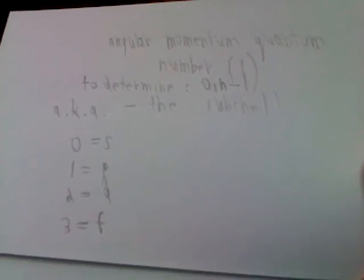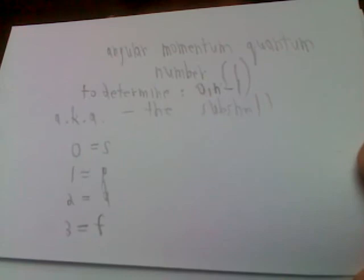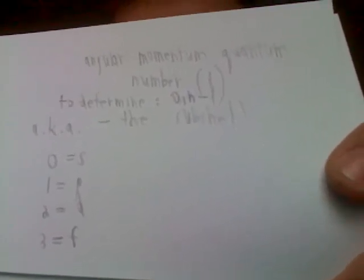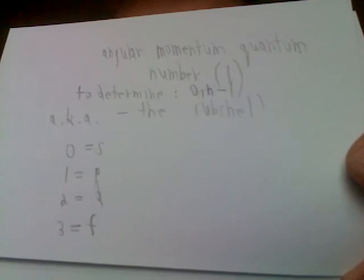These are all the whole number values from negative L to positive L. So if the angular momentum quantum number is 1, the possible magnetic quantum numbers are negative 1, 0, and positive 1. Thus we have 3 possible orientations. As you have probably learned in class, the p subshell has 3 orientations: an orientation along the y-axis, an orientation along the x-axis, and an orientation along the z-axis.